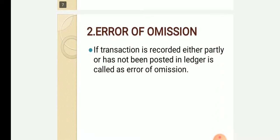What is error of omission? Error of omission occurs when a transaction is recorded only partly or has not been posted in the ledger at all. If you have omitted recording a transaction either fully or partially, that is called error of omission.